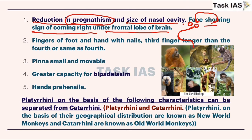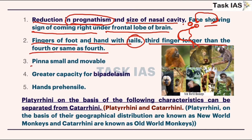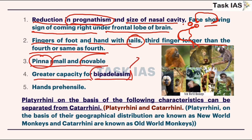Fingers of the foot and hand are with nails, but in prosimians there were claws. The third finger is longer than the fourth. The pinna is small and movable. There is greater capacity for bipedalism because of strong thigh muscles. The use of hind limbs for locomotion is reduced. Hands are prehensile, showing that hands also do some kind of locomotory activities.